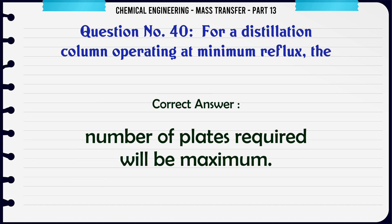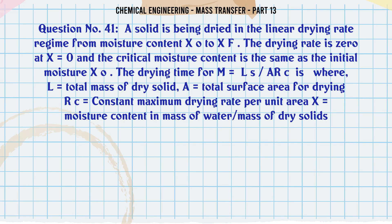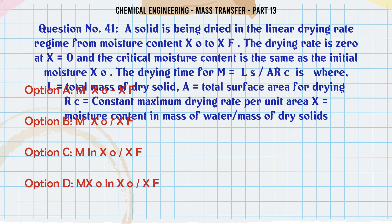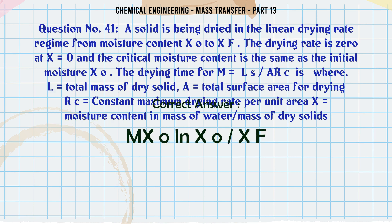A solid is being dried in the linear drying rate regime from moisture content X0 to Xf. The drying rate is 0 at X0 and the critical moisture content is the same as the initial moisture X0. The drying time is M/(A·Rc) × X0·ln(X0/Xf), where L = total mass of dry solid, A = total surface area for drying, Rc = constant maximum drying rate per unit area, X = moisture content in mass of water per mass of dry solids. The correct answer is: M·X0·ln(X0/Xf).